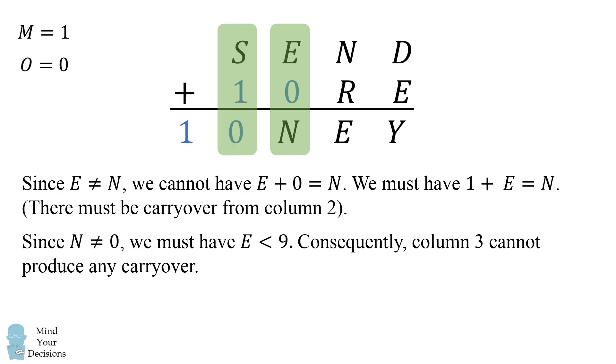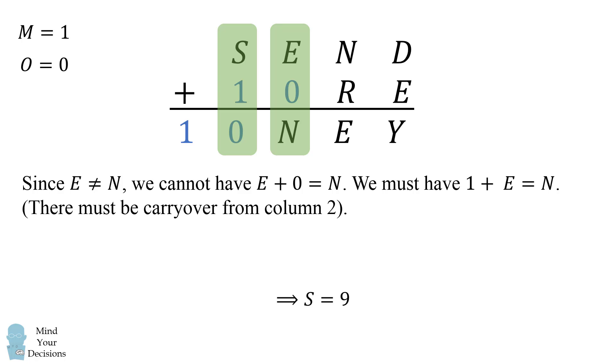So we're going to look at column 4 again, and we must have S plus 1 is equal to 10, which means S is equal to 9. So we figured out another digit.